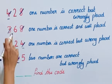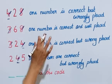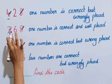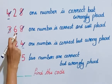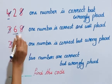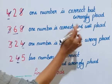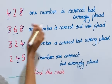In the 2nd clue (368), after cancelling 3 and ruling out 8, only 6 remains as the correct number. So 6 is the correct number in clue 2, and it is well placed.